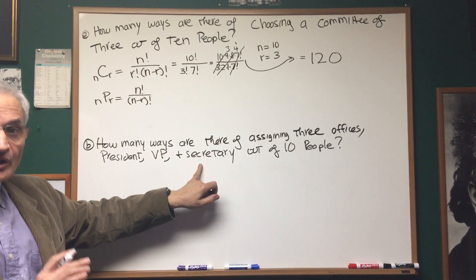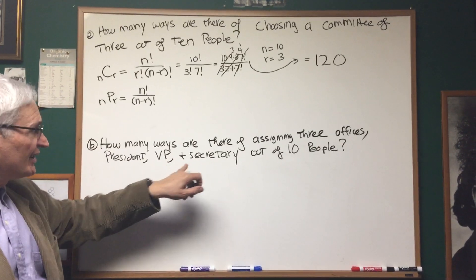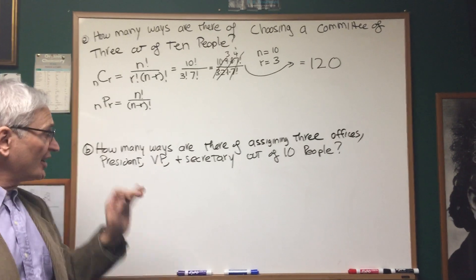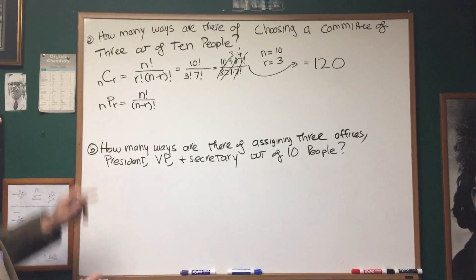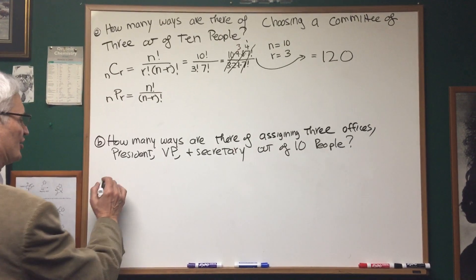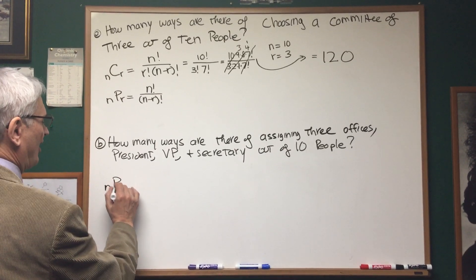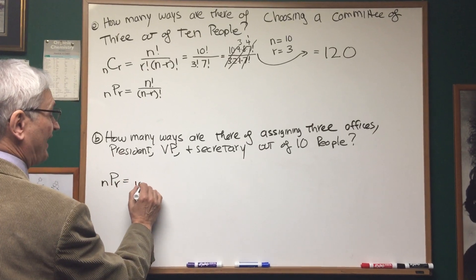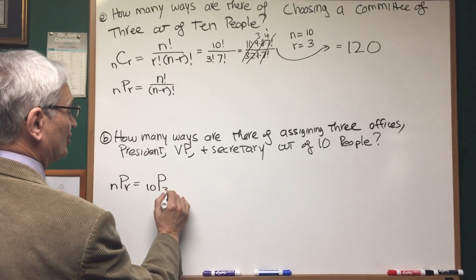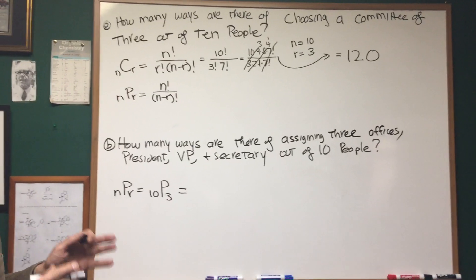In other words, order is going to count. This is an instance where order counts. Assigned categories. So we're going to use the permutation formula, nPr, which in this case is going to be out of the ten people we're going to be choosing three where order counts.